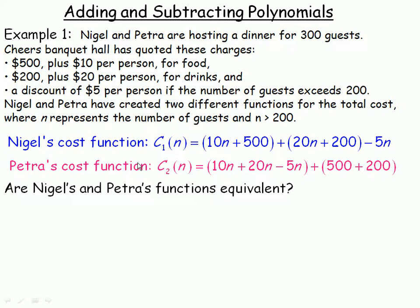Petra has grouped things differently. She's done all the variable costs, the $10 per person, the $20 per person, and then the $5 per person discount. So $10N plus $20N minus $5N. And she's added the two fixed costs, $500 and $200 together at the end here. And the question is, are Nigel's and Petra's functions equivalent?